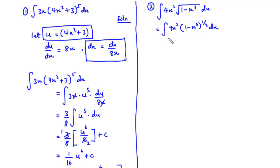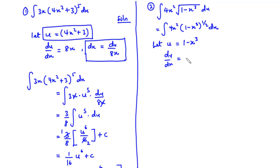What would be most appropriate to make u equal to? We can make u equal to what's in the bracket, that is 1 minus x cubed. Therefore we have du/dx equal to — 1 is a constant so it goes to 0 — and we have negative 3x squared. Therefore dx equals du divided by negative 3x squared.